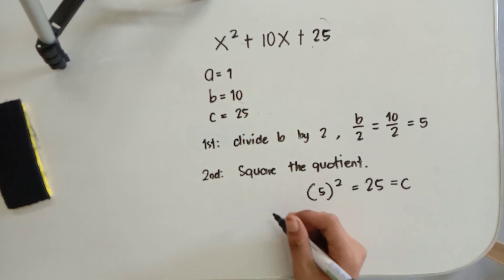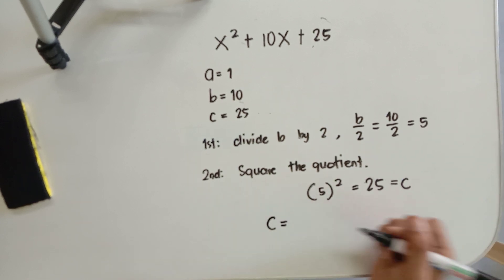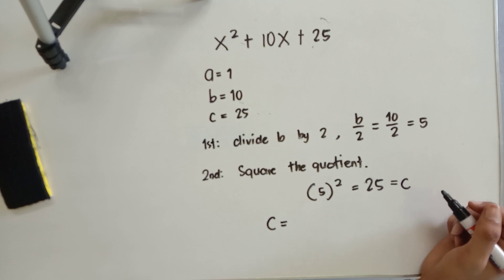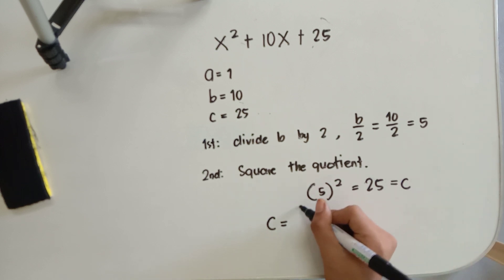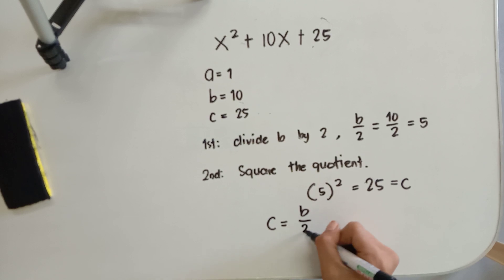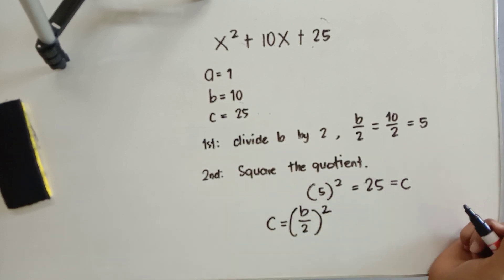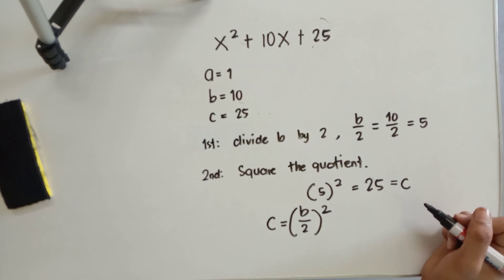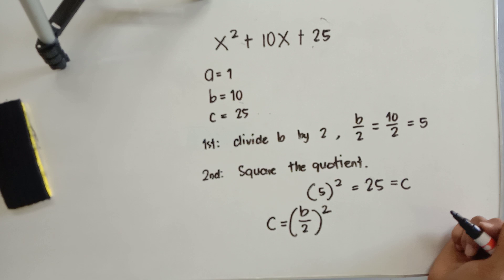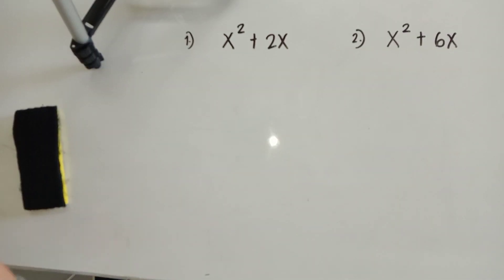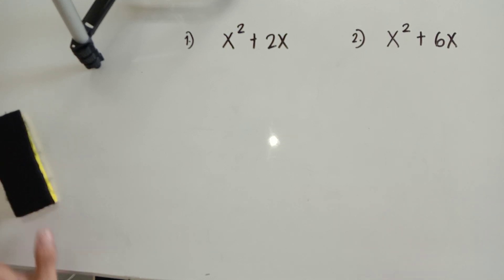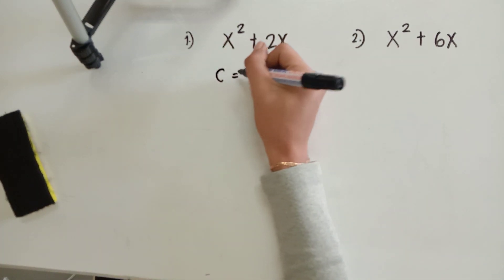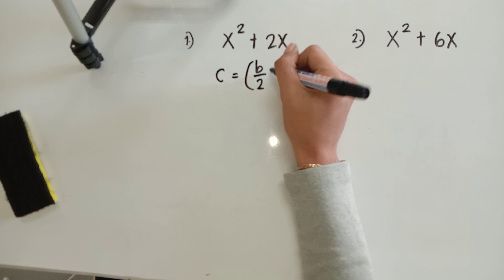In general, in finding the third term of a quadratic binomial to make it a perfect square trinomial, we have to divide b by 2, and after that, square it. That is how you complete a perfect square trinomial. Let's proceed to the next two examples, completing the perfect square trinomial using the general formula.